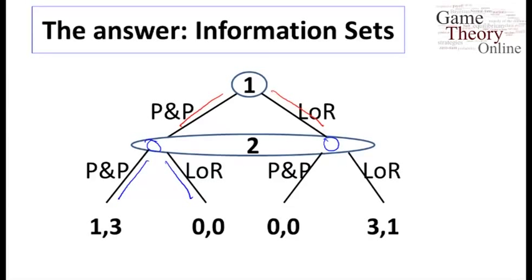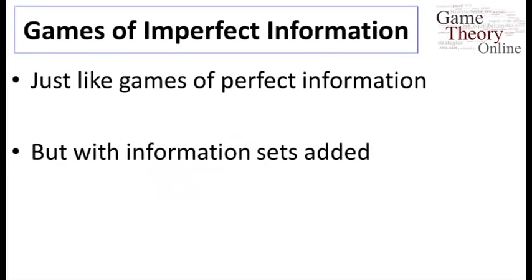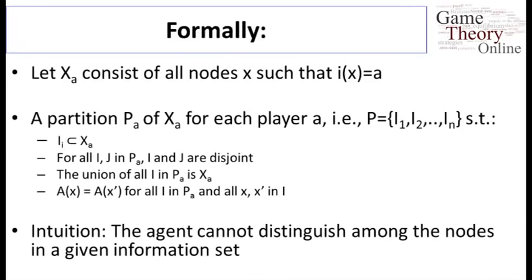How do we make this precise? Well, we have the exact same formalism of games of perfect information, but add information sets. How do we add information sets? Well, we have, first of all, we use the notation X sub A to denote all the nodes in which it's A's turn to act.